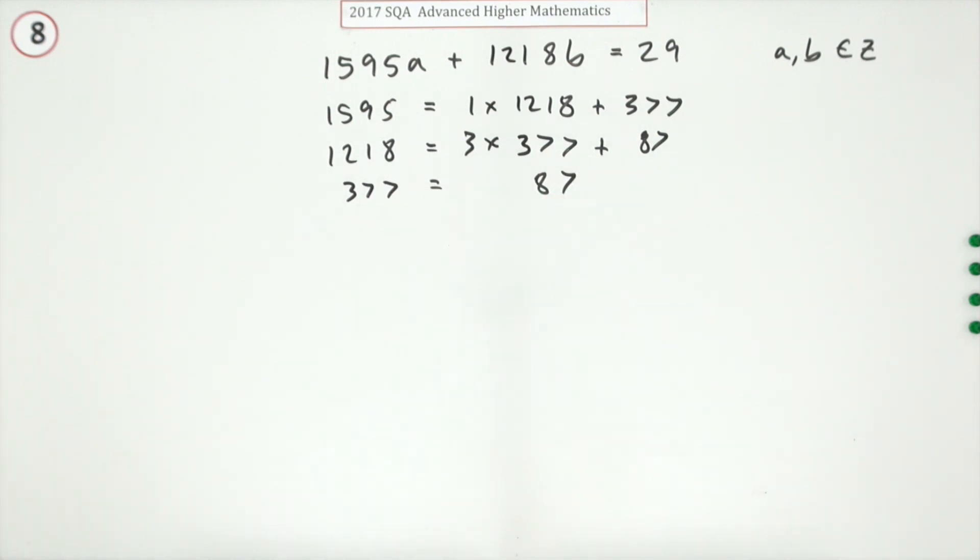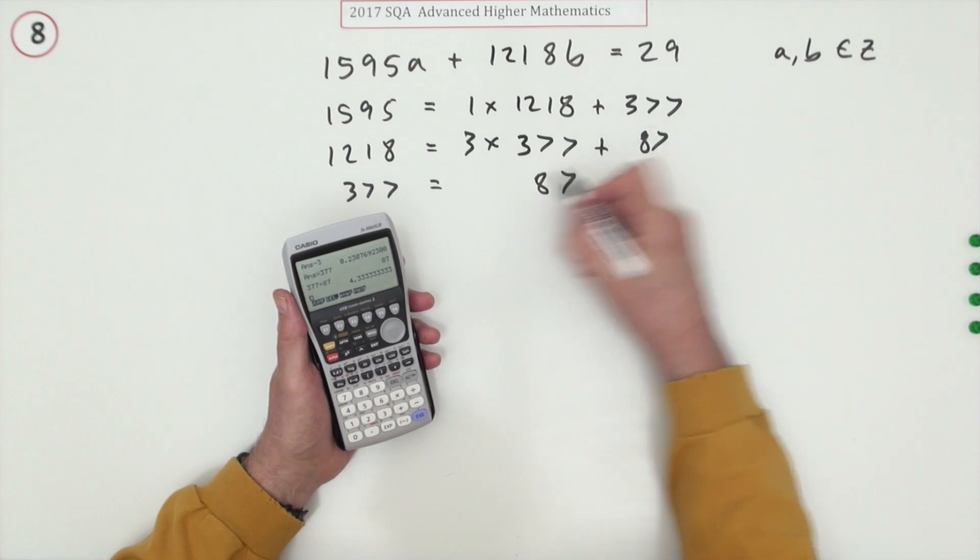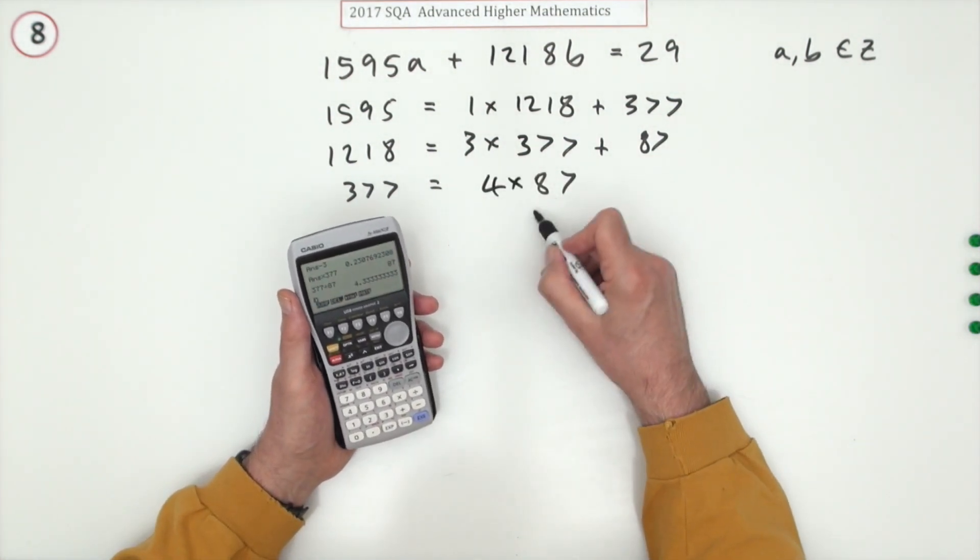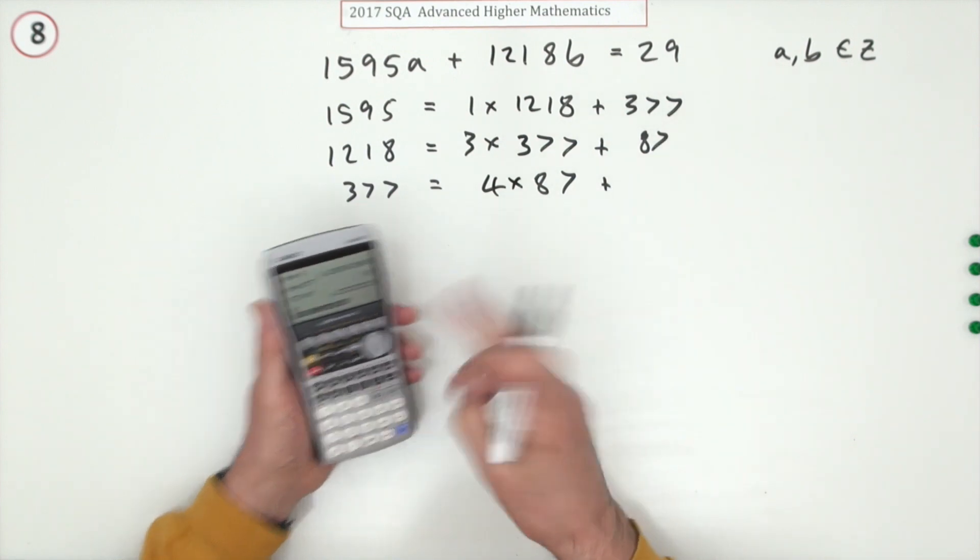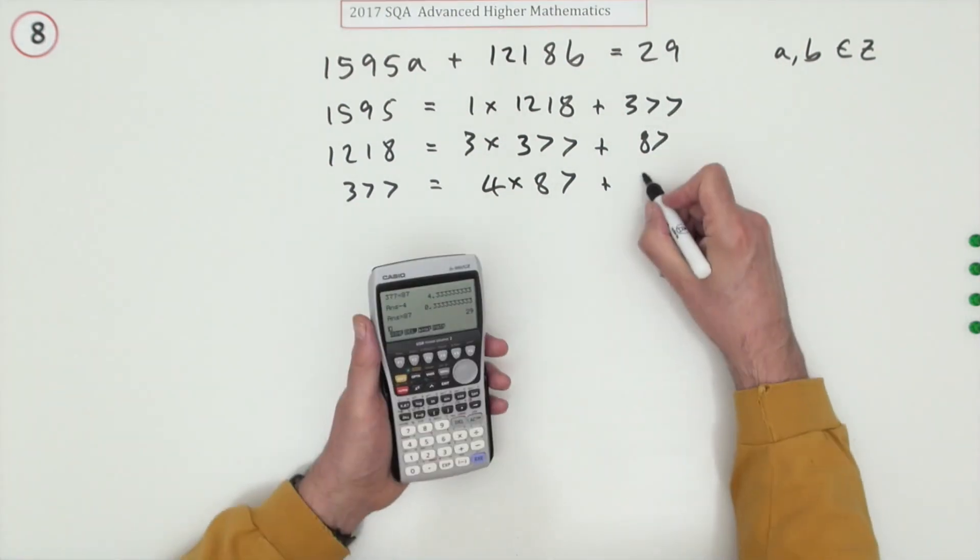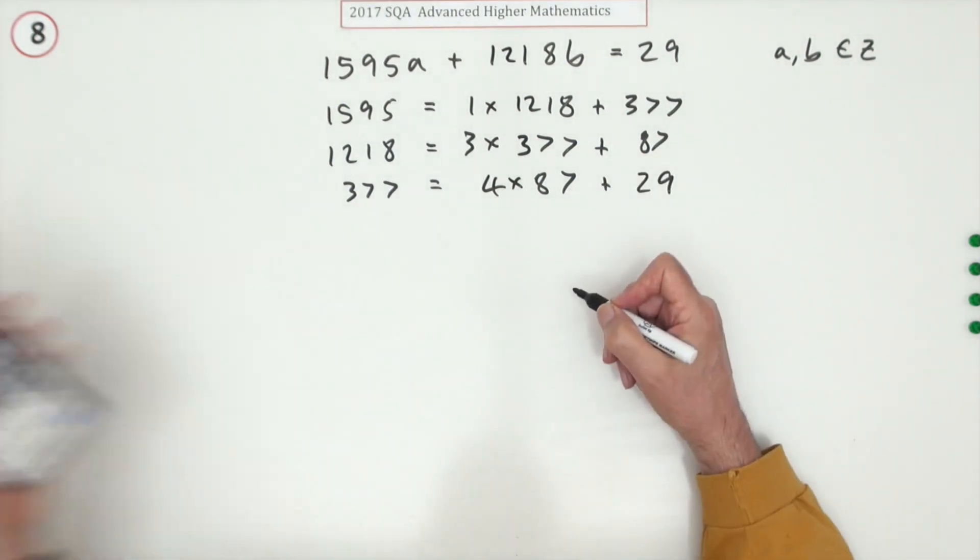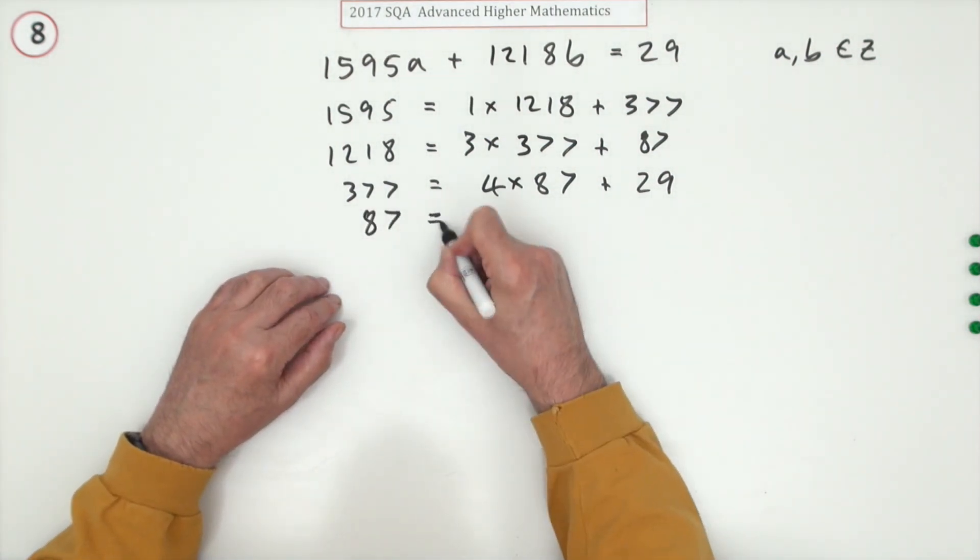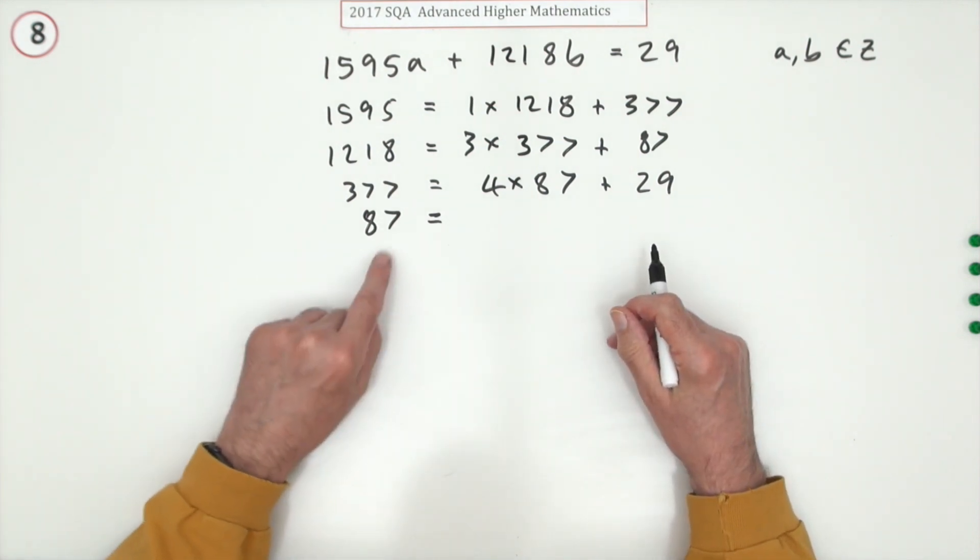Now you start again. 377 will be - if 87 goes in exactly that's it. If it doesn't, we just do it again. And it didn't, it went in four times. Don't really care how many times it went in, it's just the fact that it didn't go in, so there's a remainder and that remainder is 29.